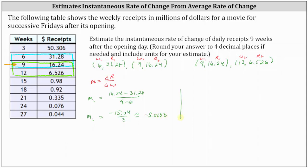Now we'll find M₂, the average rate of change from nine weeks to twelve weeks. We have the change in R divided by the change in W, which is (6.526 − 16.24) divided by (12 − 9). Simplifying, M₂ is equal to negative 3.238.